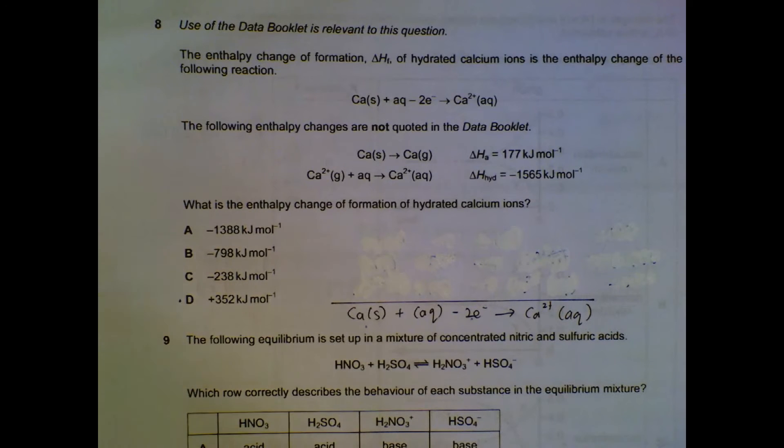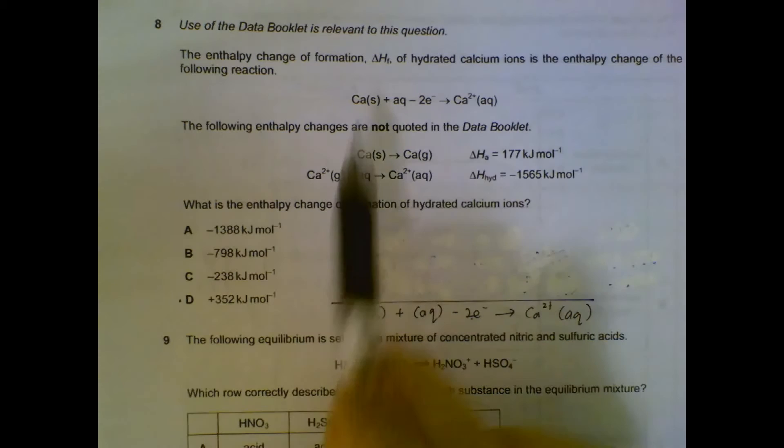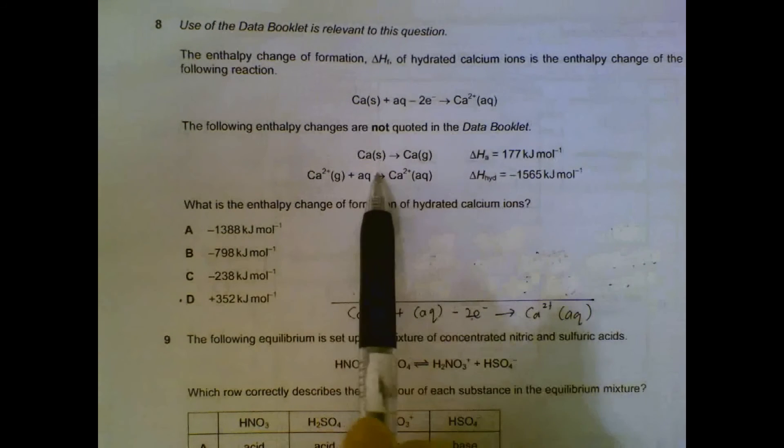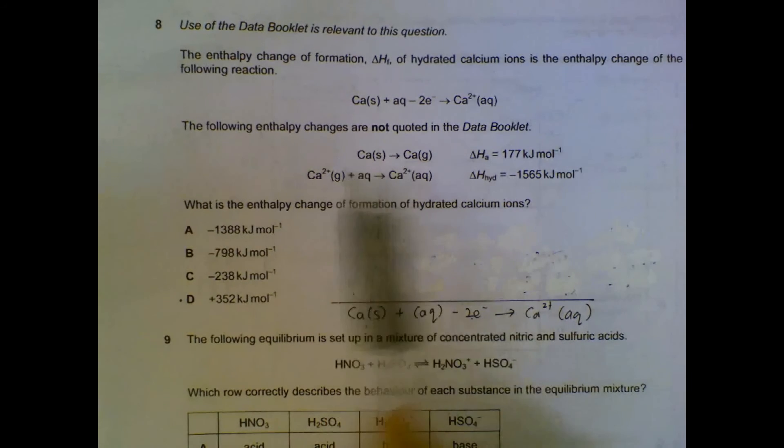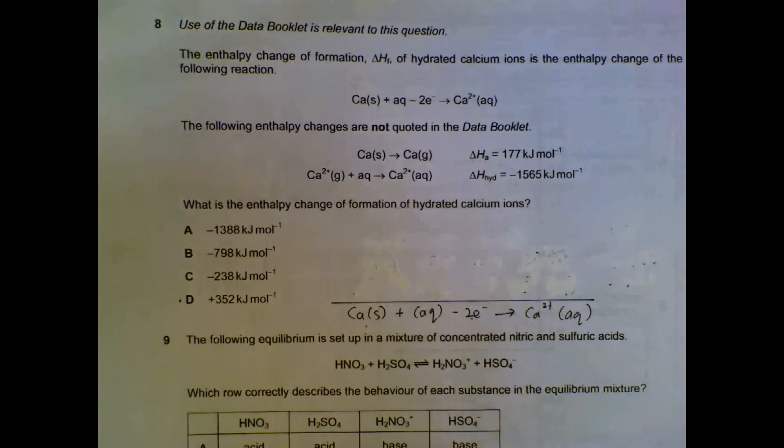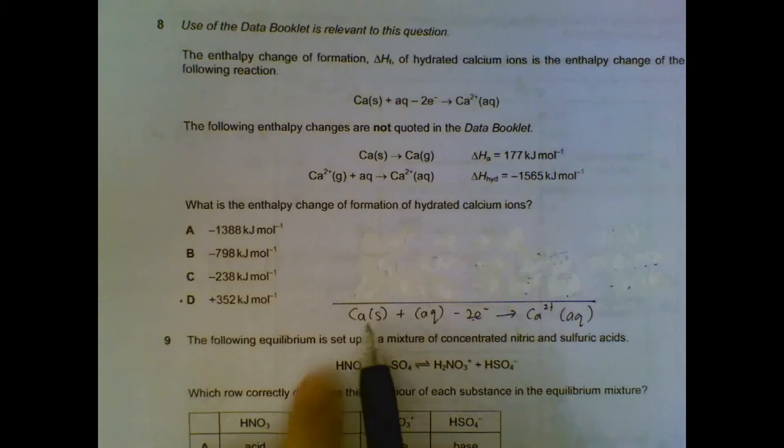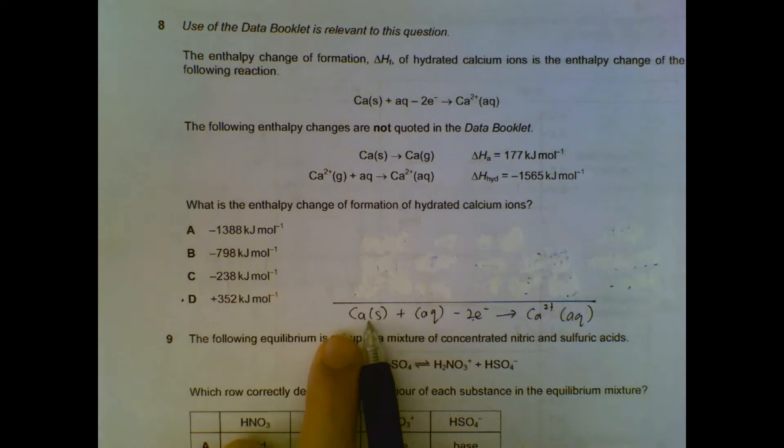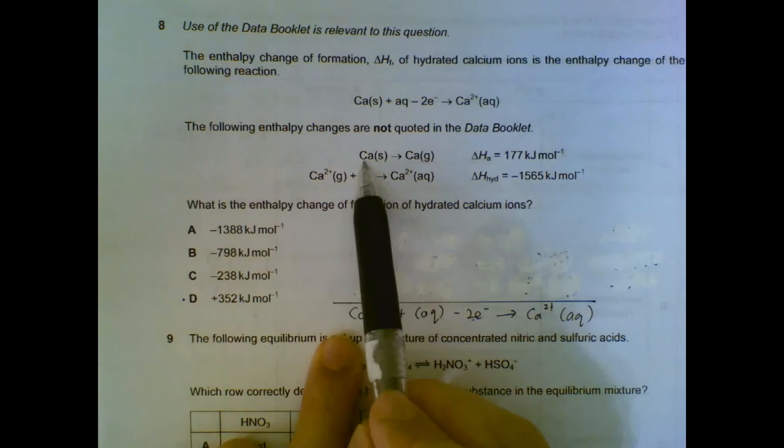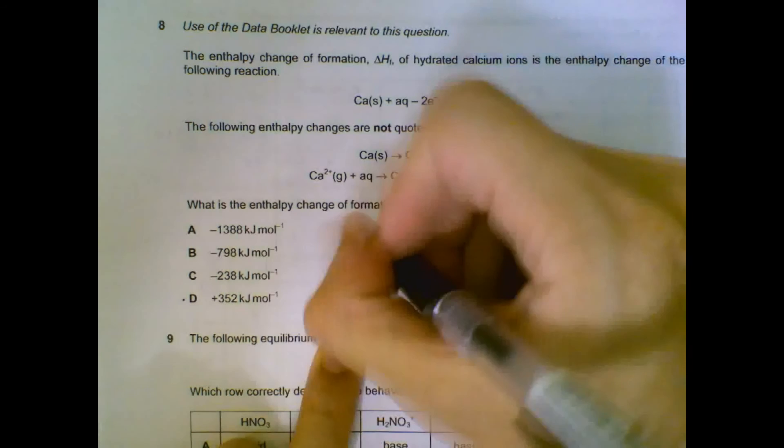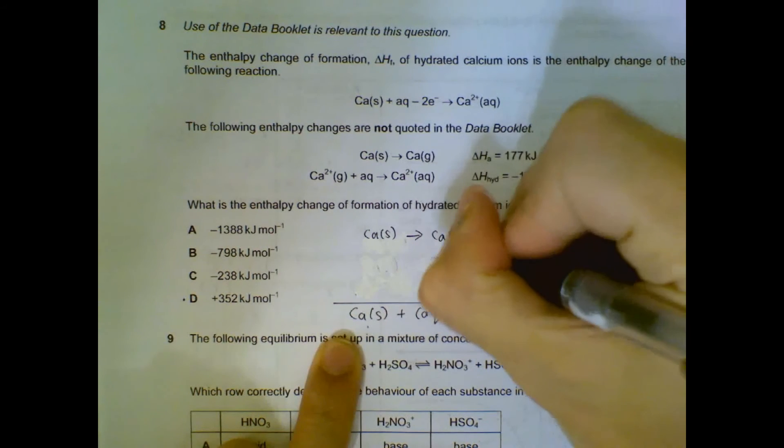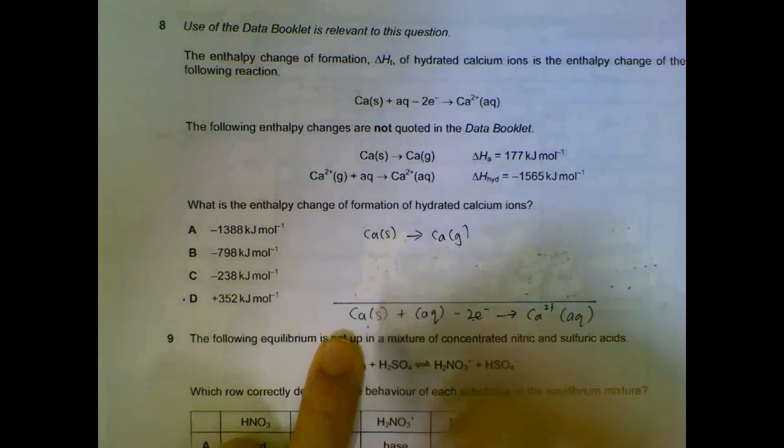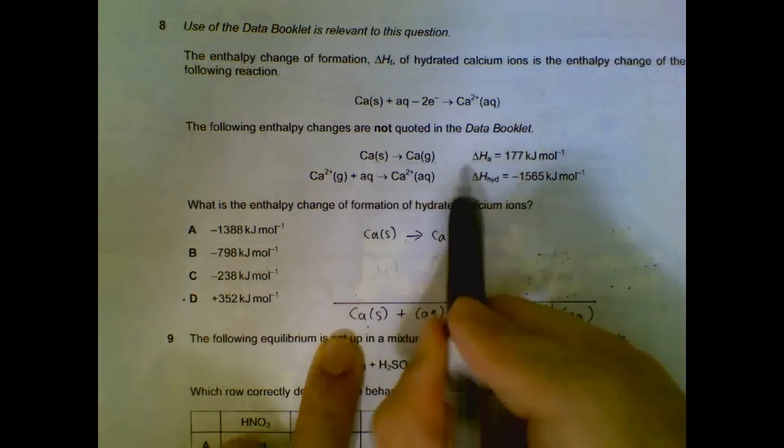Number eight: we have this overall equation which we have to find out the enthalpy change, and we are given the help of these two equations. So I write out the overall equation here and I see how I can manipulate these two plus other equations to form this overall equation. There's a Ca solid here and we have a Ca solid for the first equation on the same side, so we will just follow accordingly, keeping the solid on the left side. And since we follow this order, this number we do not flip it around, it's plus 177, it will still be plus 177. If we change the order then it will be minus 177.